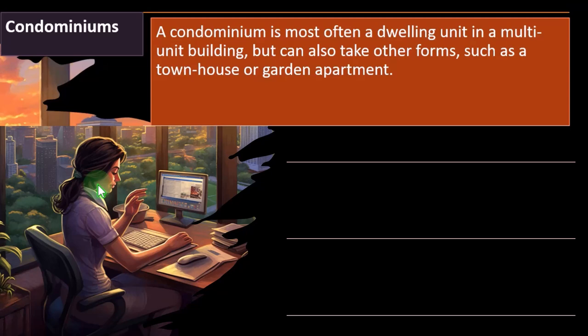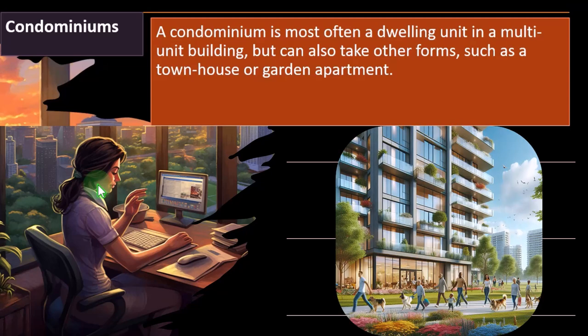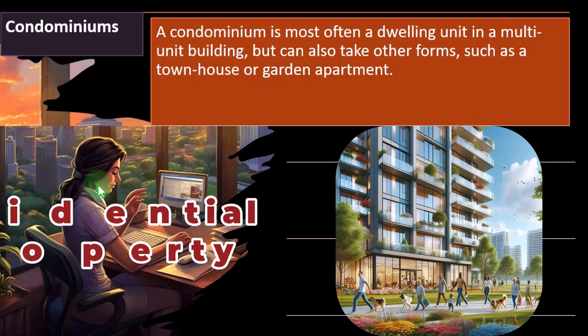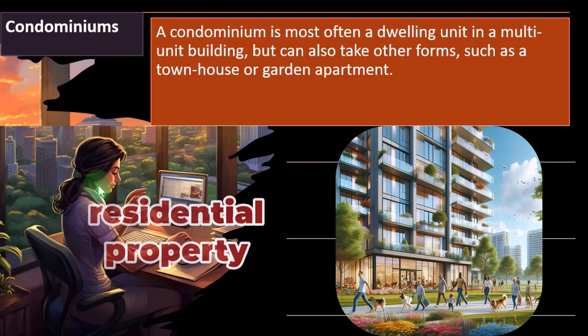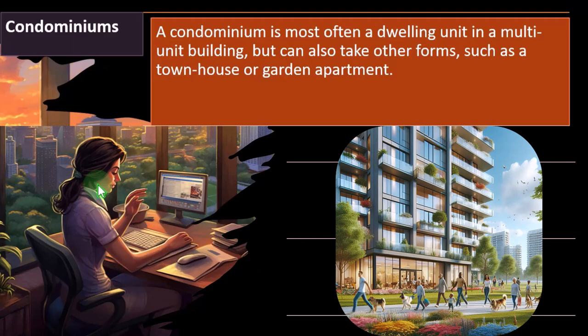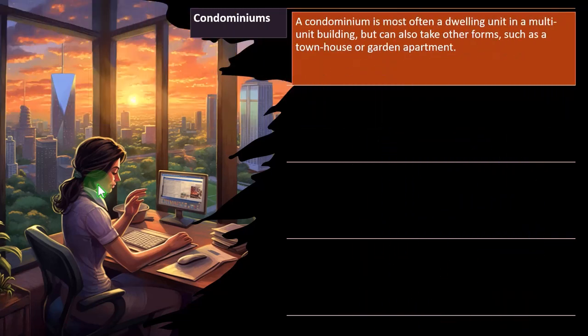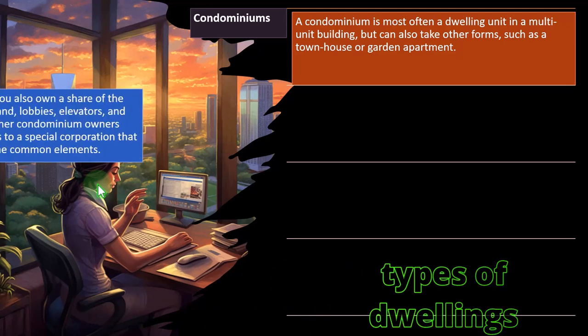A condominium is most often a dwelling unit in a multiple-unit building, but can also take other forms such as a townhouse or garden apartment. Our baseline scenario has been a second home for residential property that we're not using as a home but renting out full-time with no personal use. It gets a little more complex when we have different types of dwellings, such as condominium dwellings.